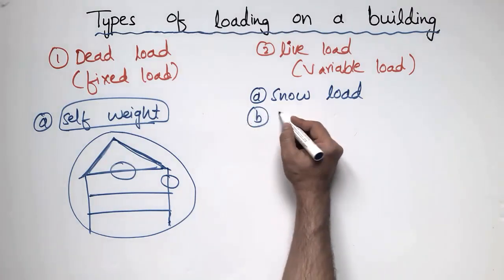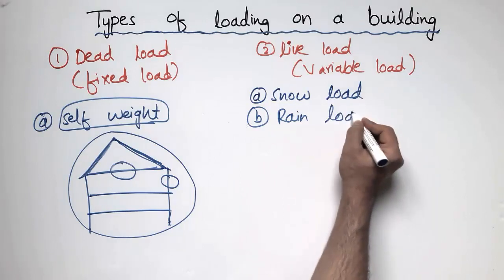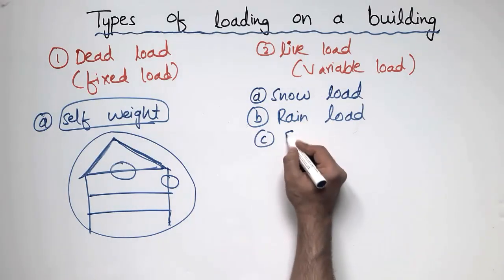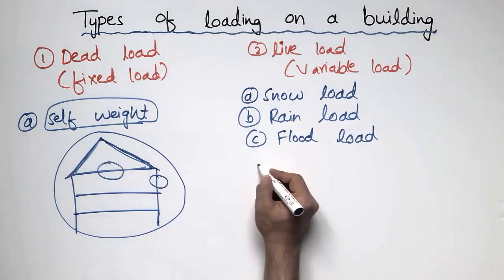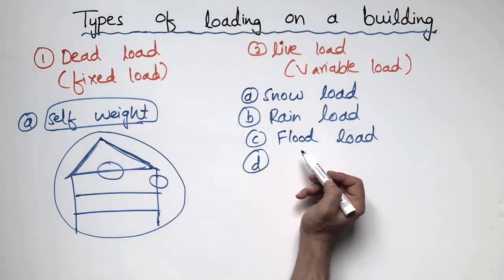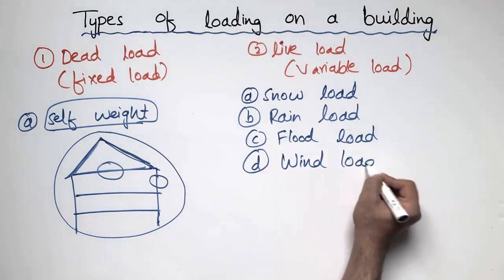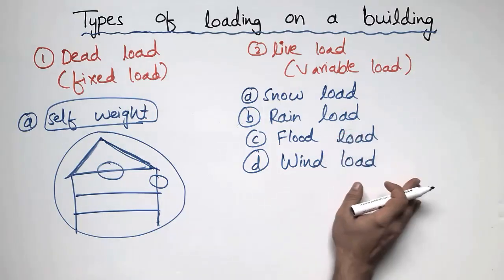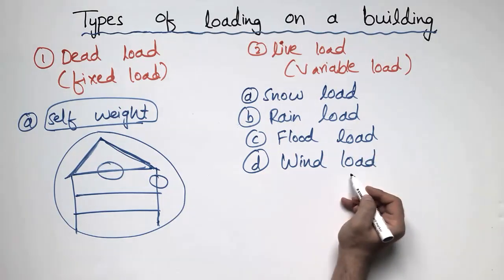The second type of live load is the rain load. The third sub-classification of the live load is the flood load. The fourth sub-type of the live load is the wind load. This is an important type of load — it depends on the height of the structure. If your building is taller, you have to increase the factor of safety for the wind load.